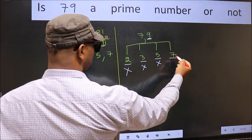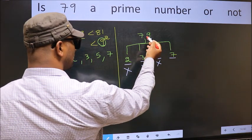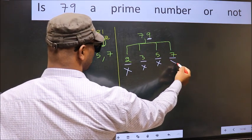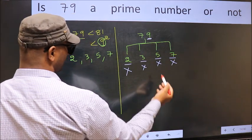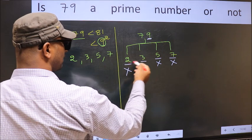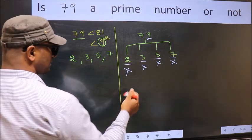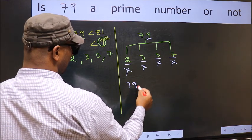Next, number 7. We don't get 79 in the 7 table, so this is not divisible by 7. So 79 is not divisible by any of these numbers. Hence, 79 is a prime number.